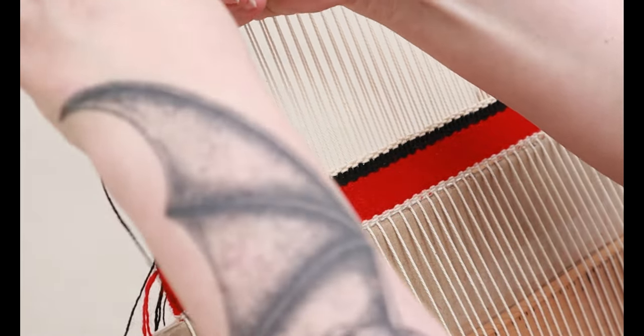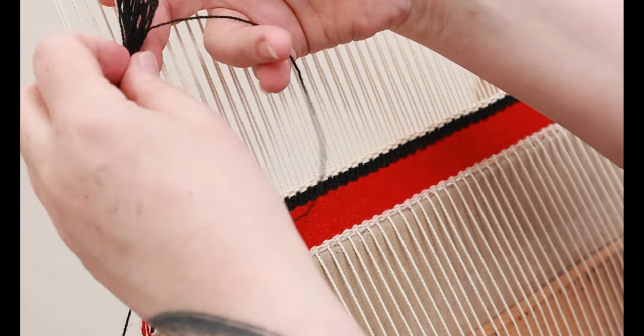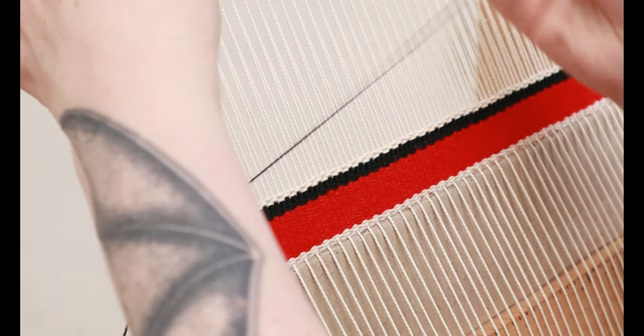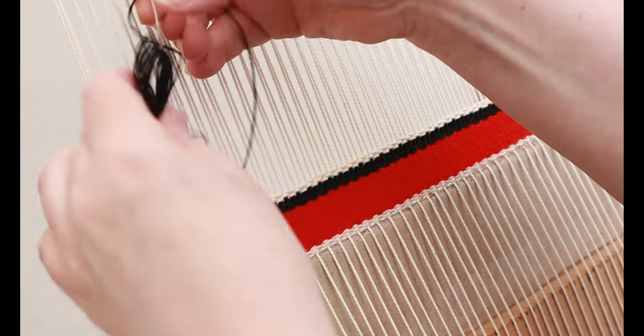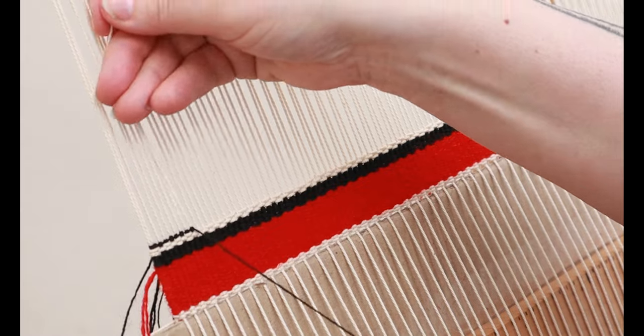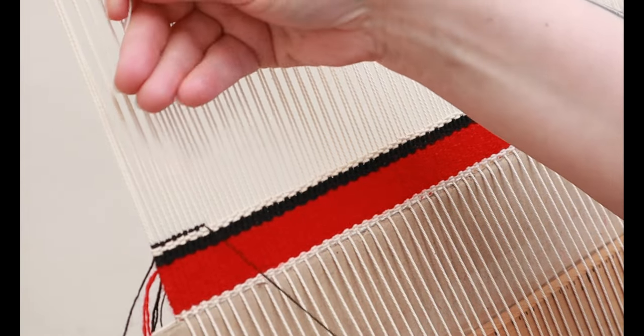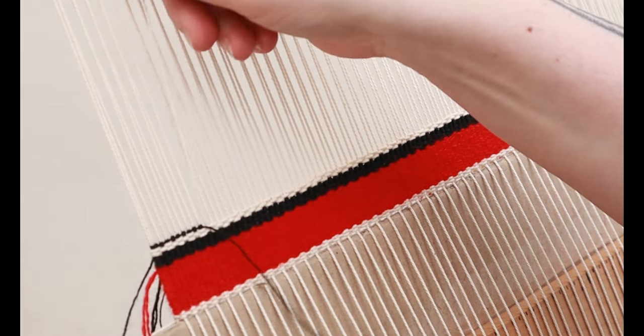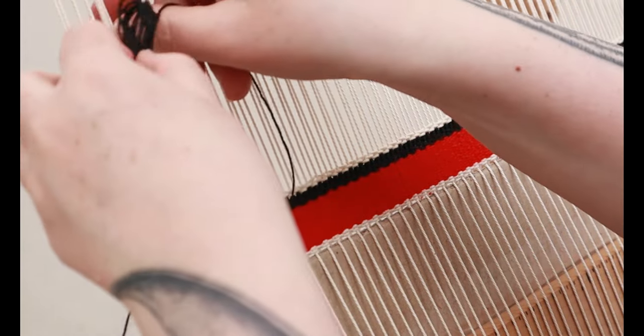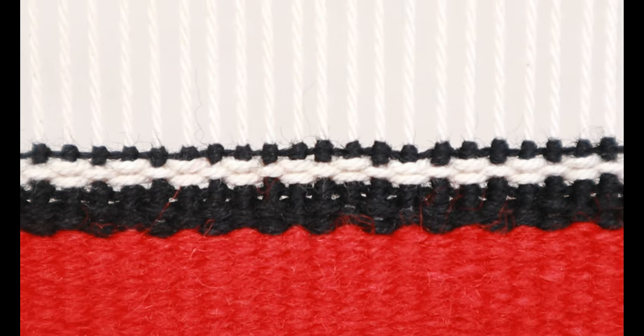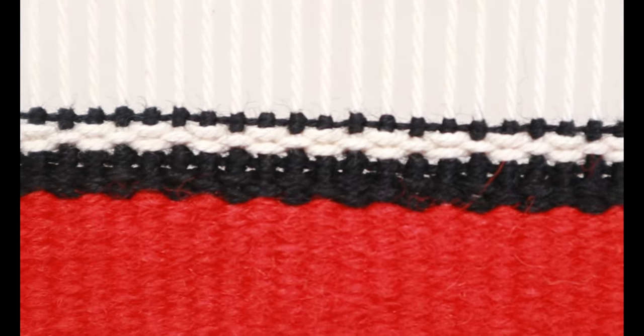Next we're going to use one strand of yarn to do yet another row of double half hitches. This will create an anchor for those three passes you're going to pull out later. So those three passes are sandwiched between two rows of double half hitches, which keeps it all nice and secure.